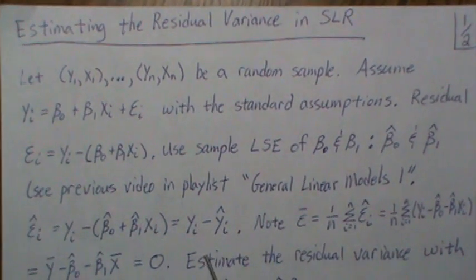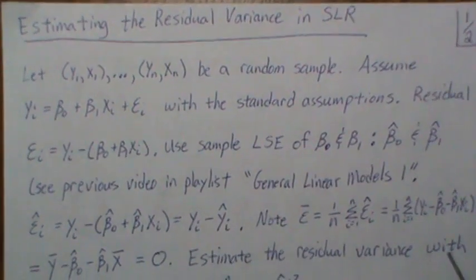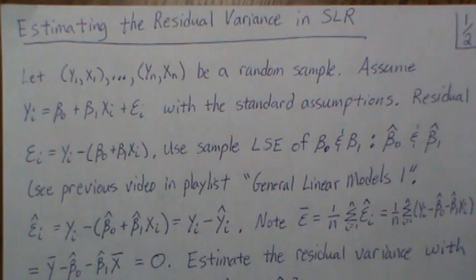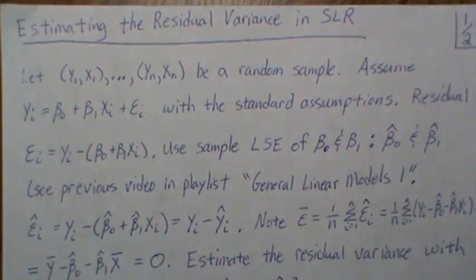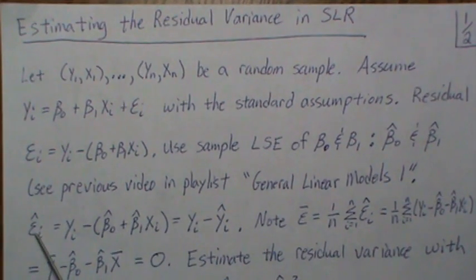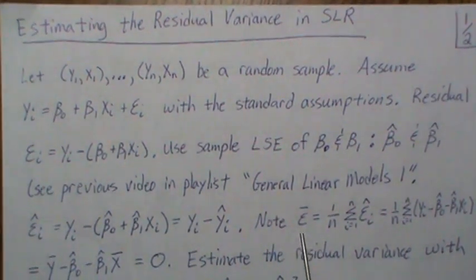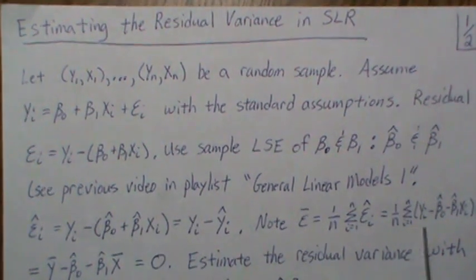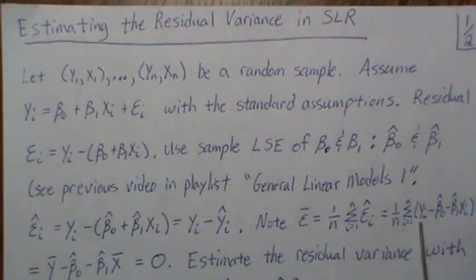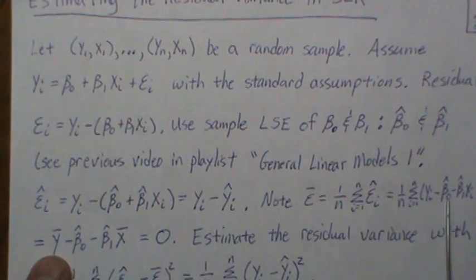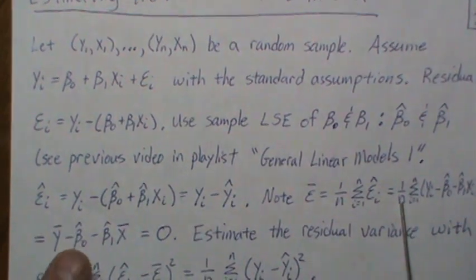To build intuition, consider how we'd calculate a sample variance for data x1 through xn: it's the sum of (xi minus x-bar) squared, divided by n minus 1. We'll try to do the same thing here. Our data points are the epsilon-i's, so we find epsilon-bar, the mean of the epsilons, which is the sum of the epsilons divided by n. Substituting what epsilon is, we get the sum of yi divided by n, which is y-bar.